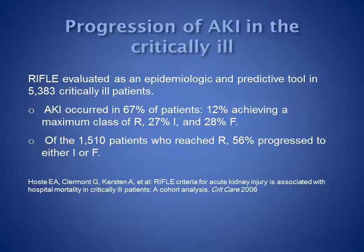Acute kidney injury is common in critically ill patients. In one study, acute kidney injury occurred in 67% of patients, with 12% achieving a maximum class of R, 27% class I, and 28% class F. Progression of acute kidney injury is common — of the 1,500 patients who reached class R, more than half progressed to either stage I or stage F.